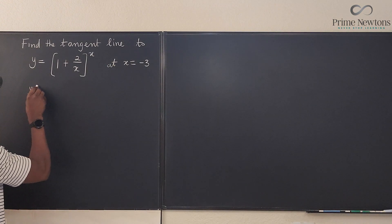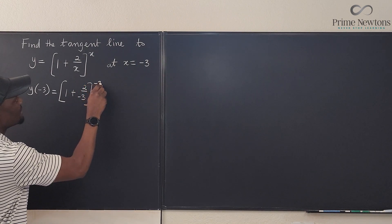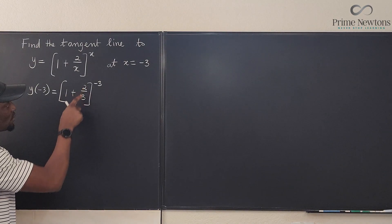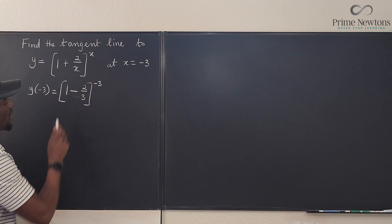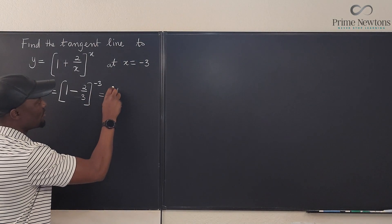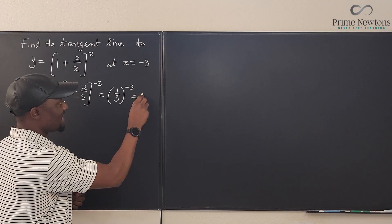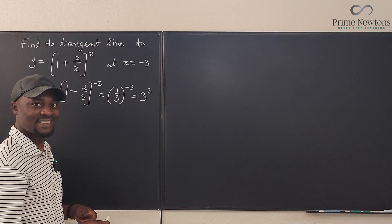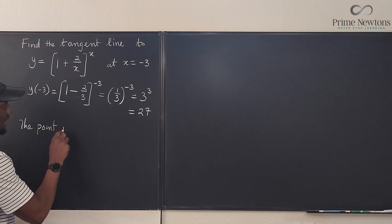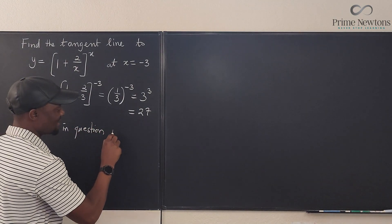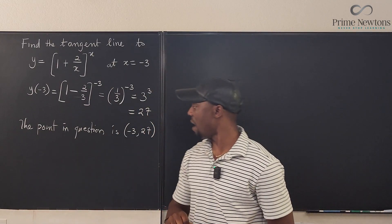So if we evaluate y when x is negative 3, it's going to be 1 plus 2 over negative 3, raised to the power of negative 3. That becomes 1 minus 2 thirds, which we can rewrite as 1 minus 2 thirds raised to power negative 3. But 1 minus 2 thirds is 1 third raised to power negative 3. With a negative exponent, you flip what's inside, so this becomes 3 to the third power, which is 27. So the point in question is the point negative 3, 27.